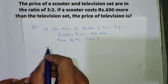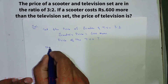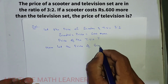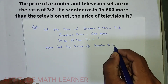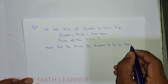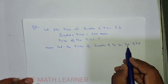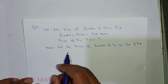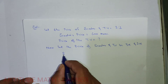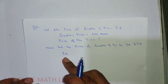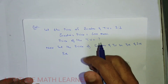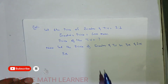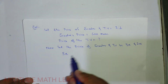Now let the price of the scooter and TV be 3x and 2x. So 3x and 2x come from the ratio 3:2. The price of the scooter is 3x. The scooter costs rupees 600 more than the TV, which means the price of the TV is less than the scooter by 600.